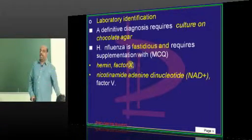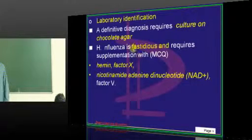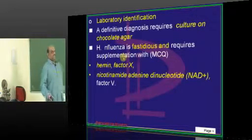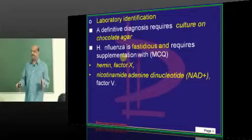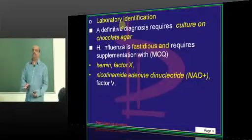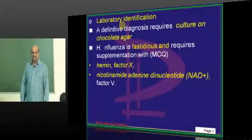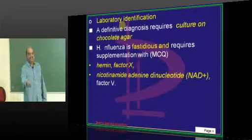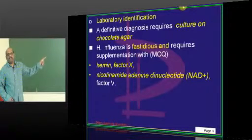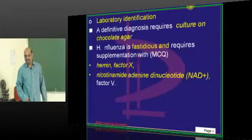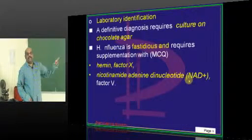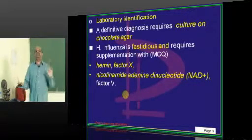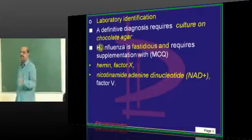We need to grow H. influenzae on chocolate agar. Why does it need chocolate agar? H. influenzae has special growth requirements. It requires hemin, called Factor X, and nicotinamide adenine dinucleotide (NAD+), called Factor V. These two special factors are required for H. influenzae growth, and this has been frequently asked in exams.